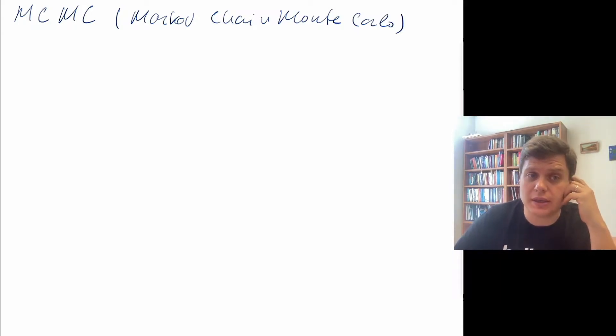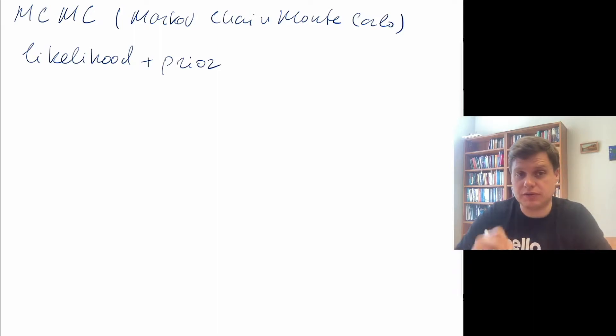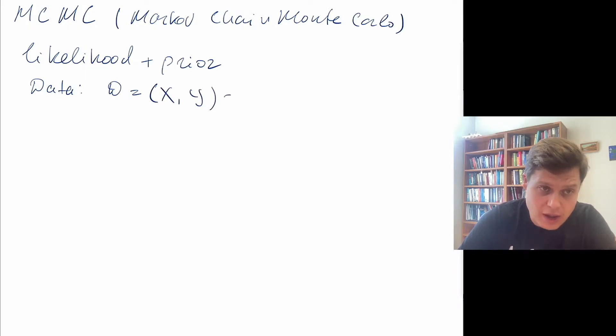Just a quick reminder that in the Bayesian model building we have two components: we have likelihood and we have the prior. And the likelihood is a function of the model parameters and the data. So let's say we have a data set, we're going to call it D, and let's say we have a supervised learning problem. So we have pairs of X and Y, and just a sequence of X_i and Y_i pairs.